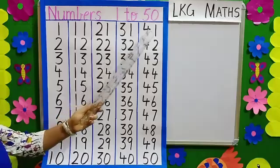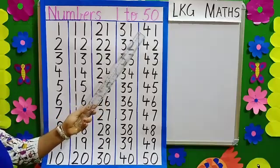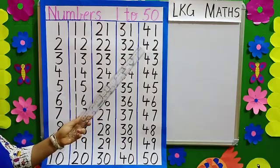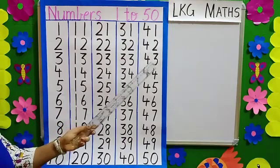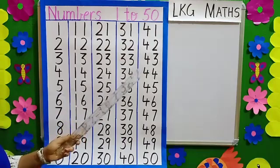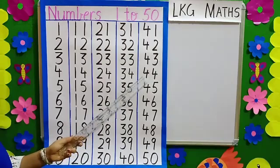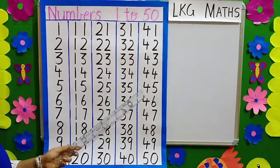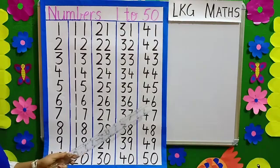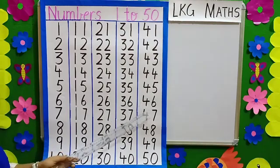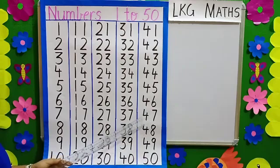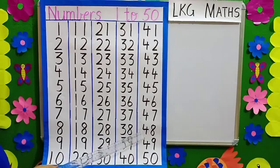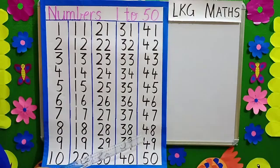4, 1 — 41. 4, 2 — 42. 4, 3 — 43. 4, 4 — 44. 4, 5 — 45. 4, 6 — 46. 4, 7 — 47. 4, 8 — 48. 4, 9 — 49.